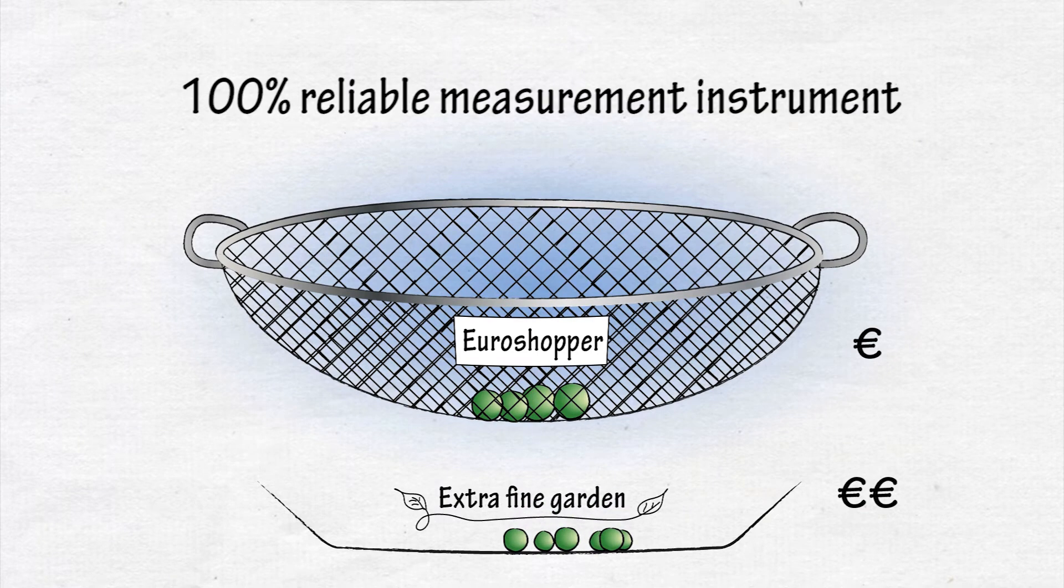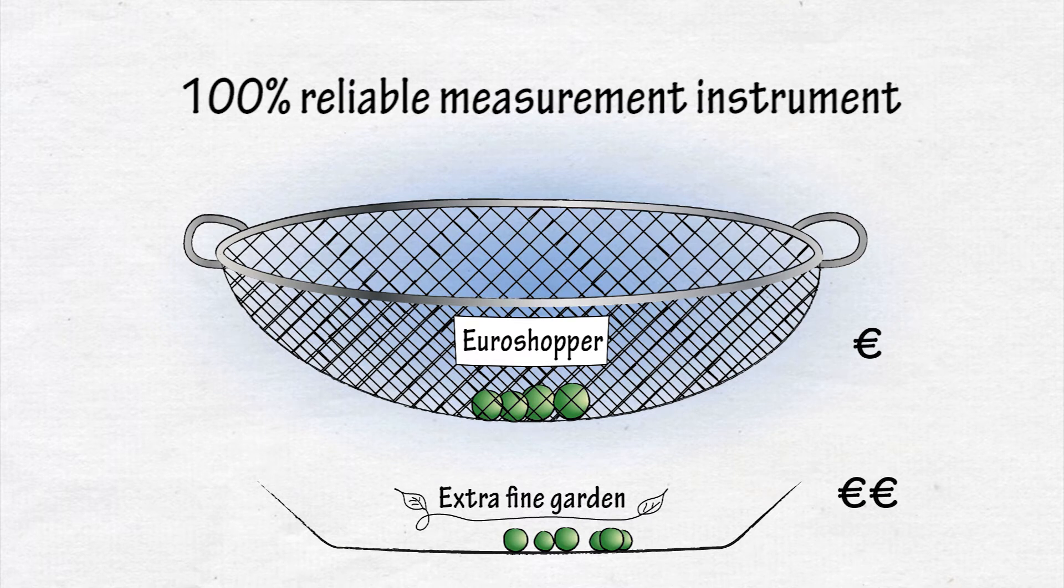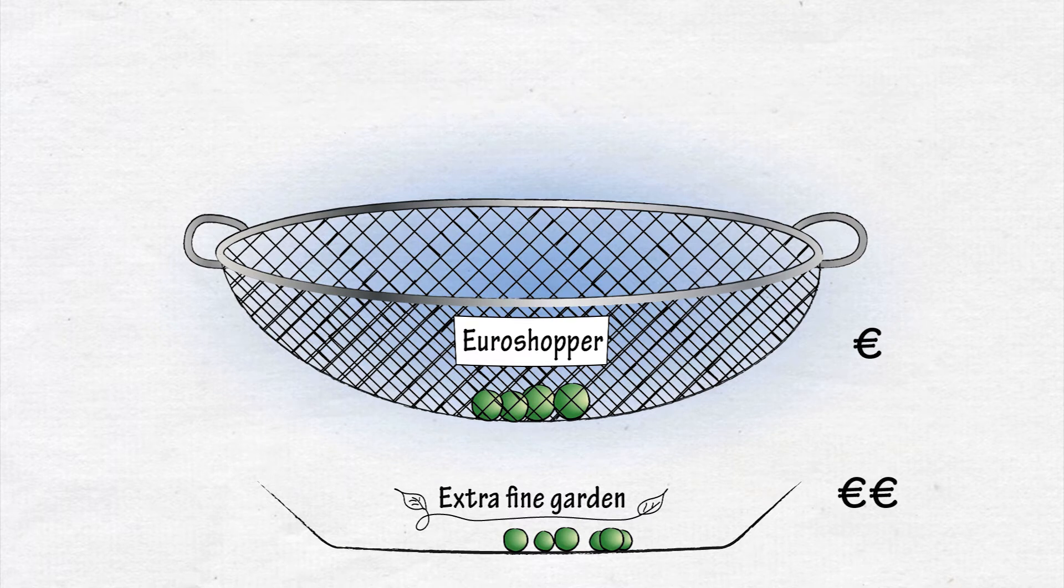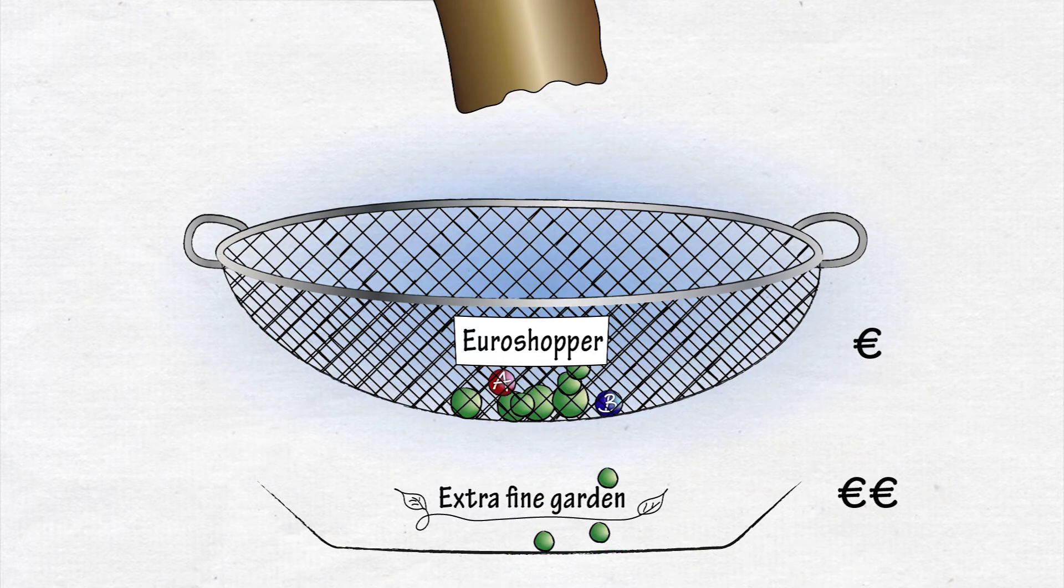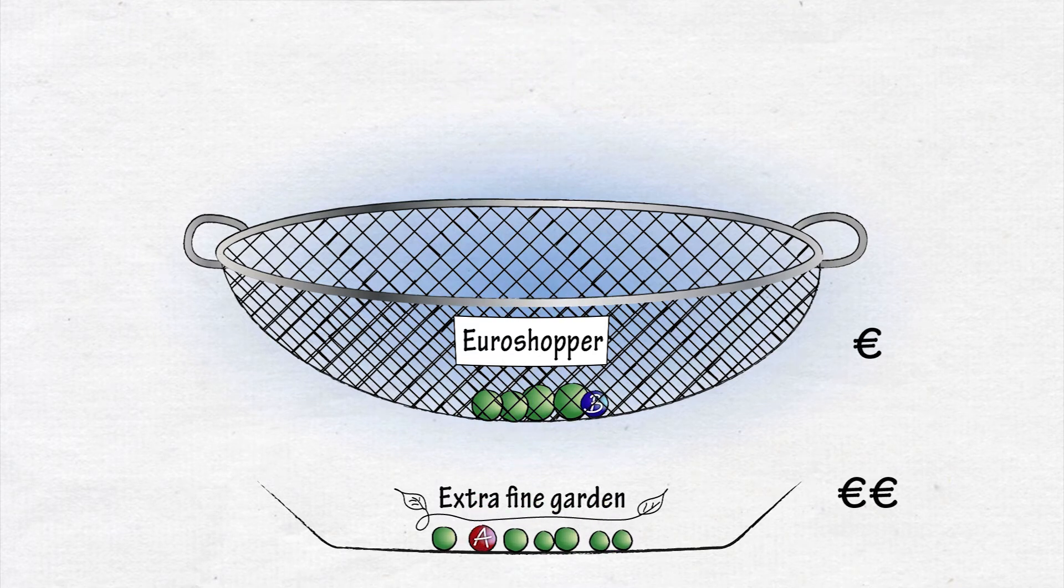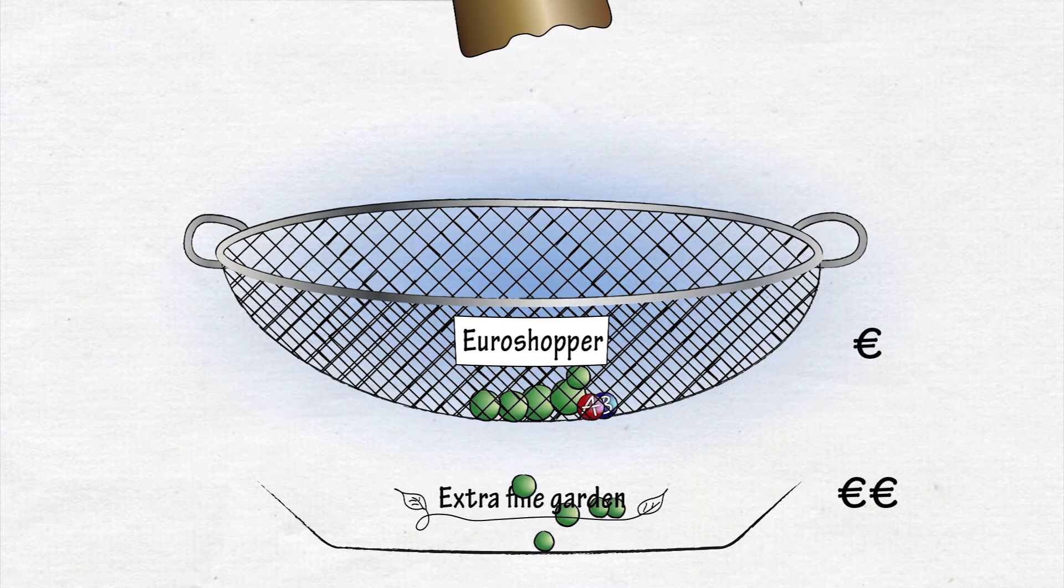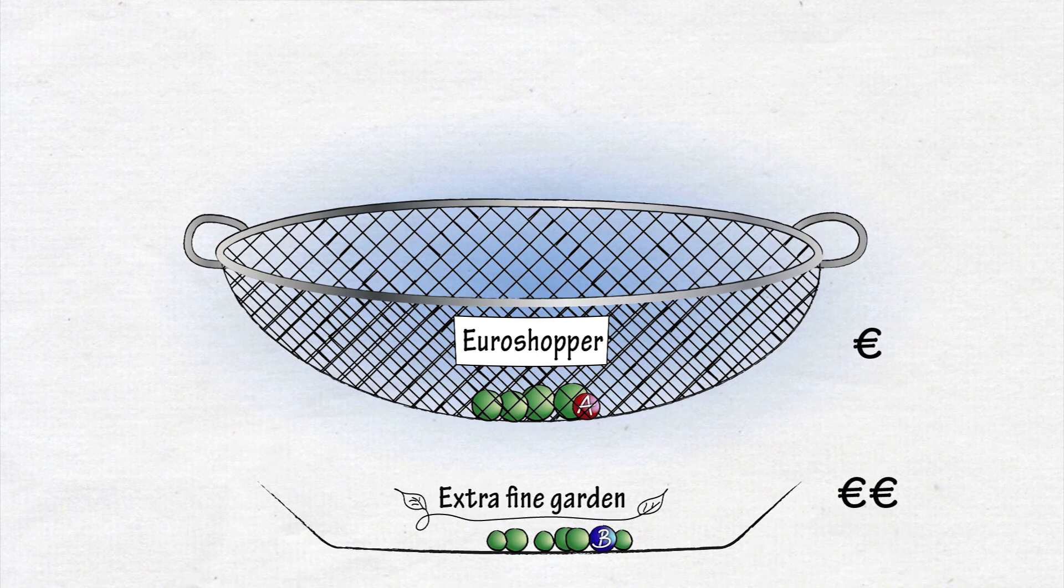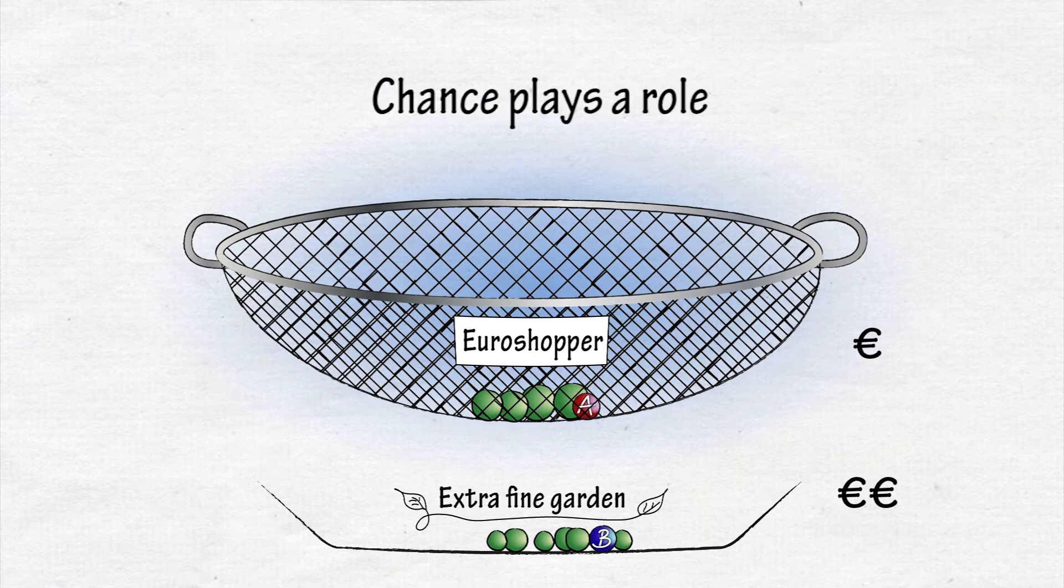But suppose one hole in the sieve is slightly larger than the others. When you put the peas through the first time, perhaps PA will fall through the larger hole. But when you do it again, it is likely that another pea, perhaps PB, will end up falling through this larger hole. So, the result will not be exactly the same. Chance plays a role.